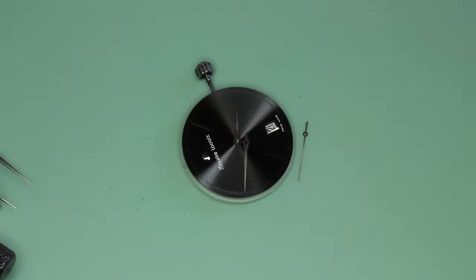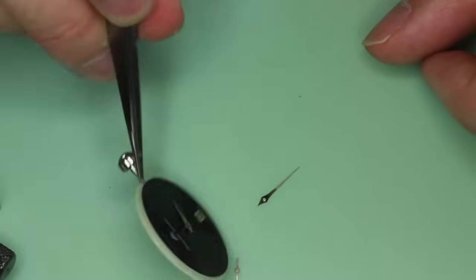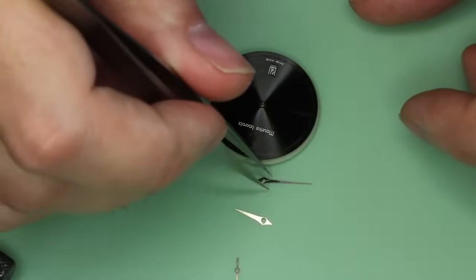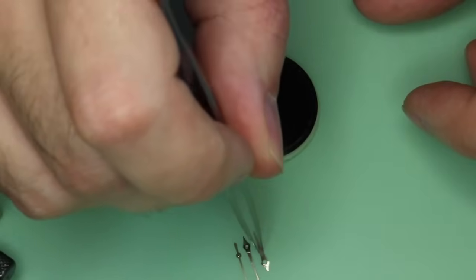Today I'm working on a Maurice Lacroix watch with an ETA 955412 movement. It's a very popular movement. You see them in a lot of high-grade quartz or battery-operated watches.